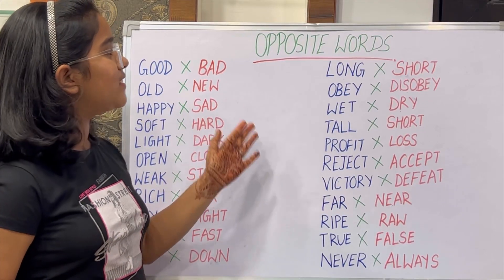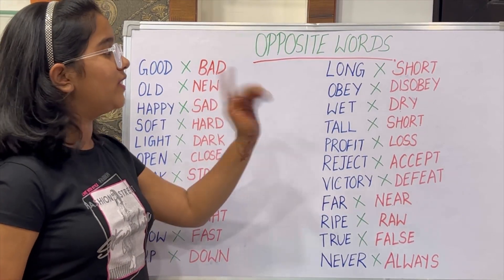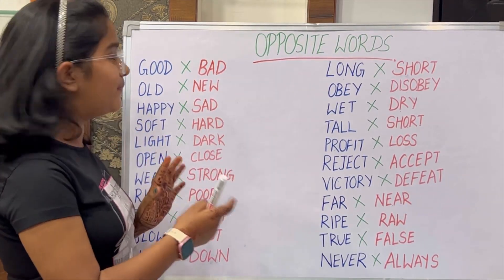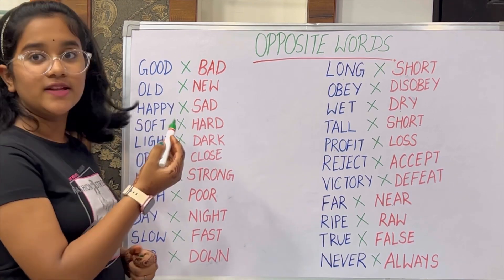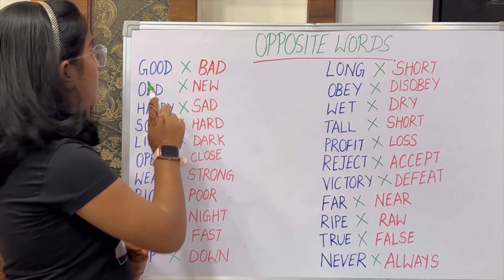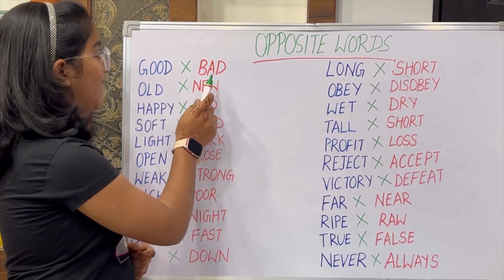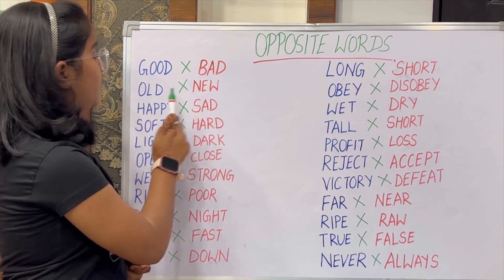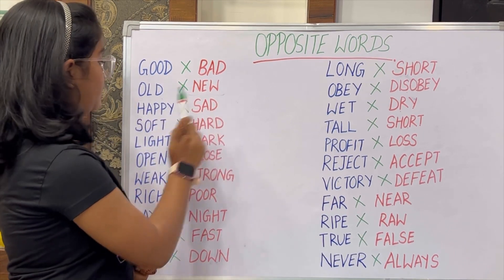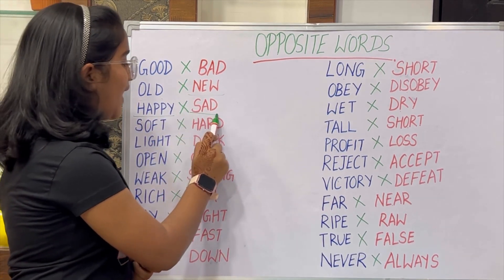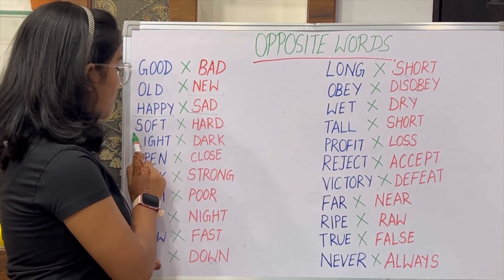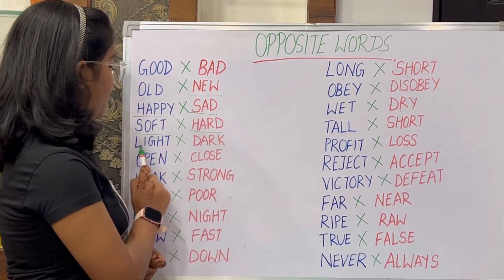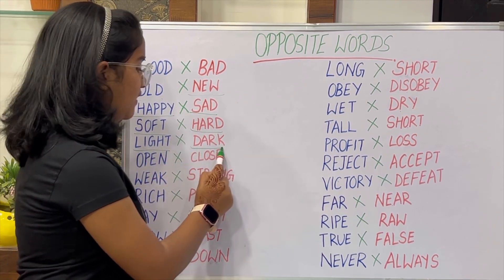Hello friends! Today we will learn about opposite words. Here are some examples. Our first example is good and bad. So good is opposite to bad. Old and new, happy and sad, soft and hard, light and dark.